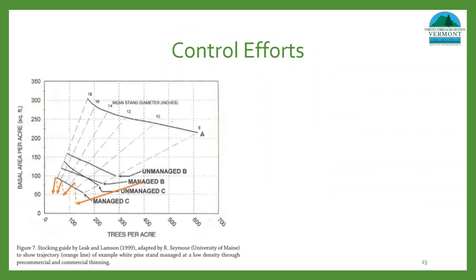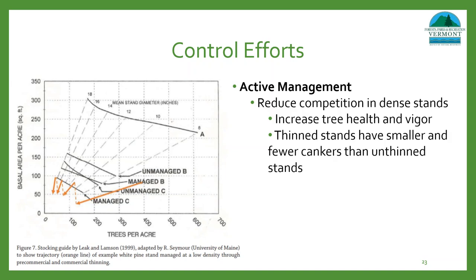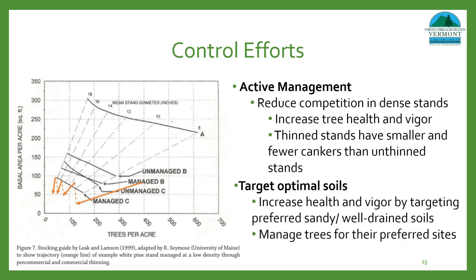How can we control this native pathogen? The best thing to do is actively manage your stands. Reducing competition in those dense stands increases overall tree health and vigor and makes the environment much less favorable for fungal growth. Studies have shown that thinned stands have smaller and less frequent cankers than unthinned stands — this was a study in both Maine and New Hampshire, so it was regional. In addition to managing your stands, try to target optimal soils and grow trees for their preferred sites to help remove abiotic predisposing factors for opportunistic fungi like Caliciopsis and others.